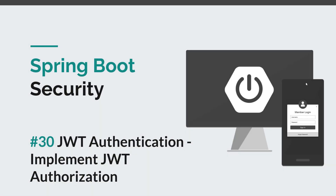Hello guys and welcome to episode 30 of the Springboard Security course. We are going to implement authorization using JWT. We already created a JWT authentication filter and now we also need to provide the authorization part. Based on a token that was generated, we need to read it, grab the user details from the database, and configure the authentication interface with the username, password, and user authorities.